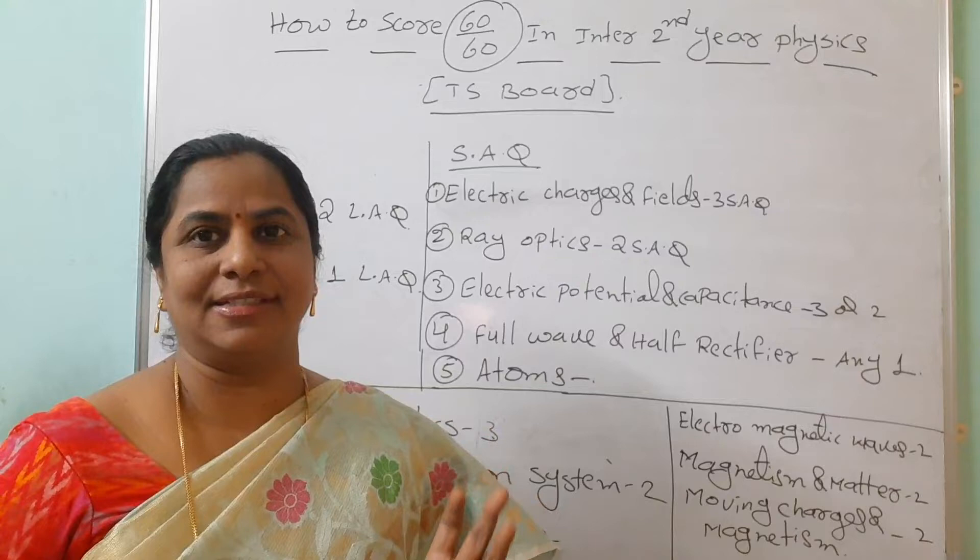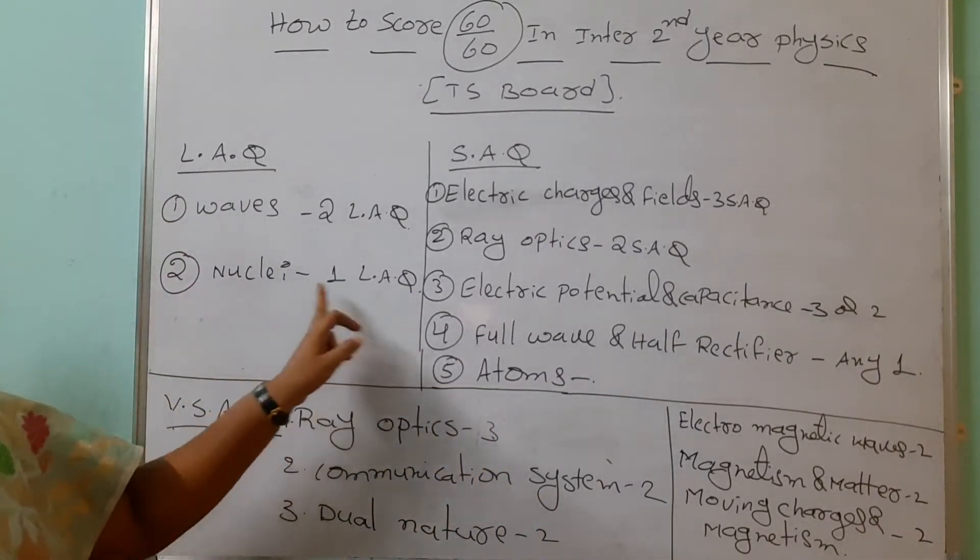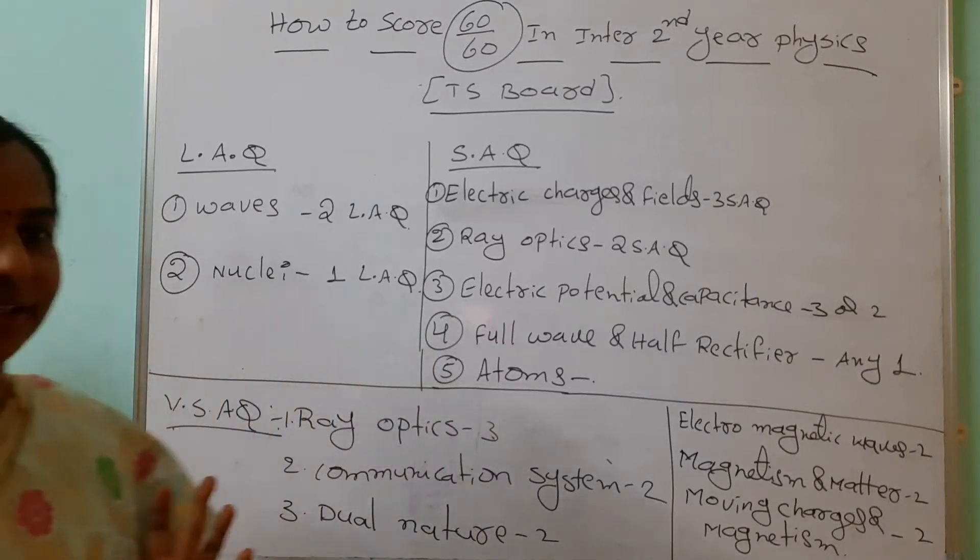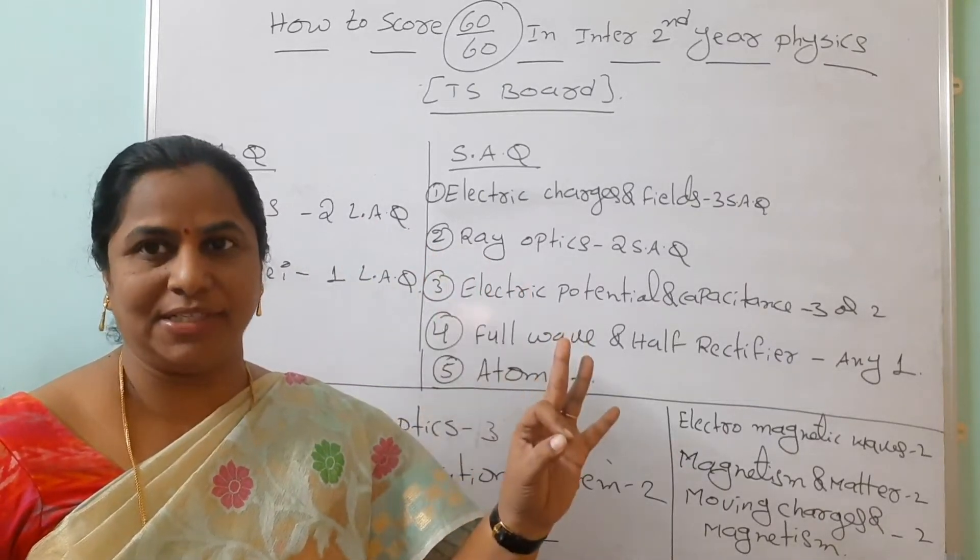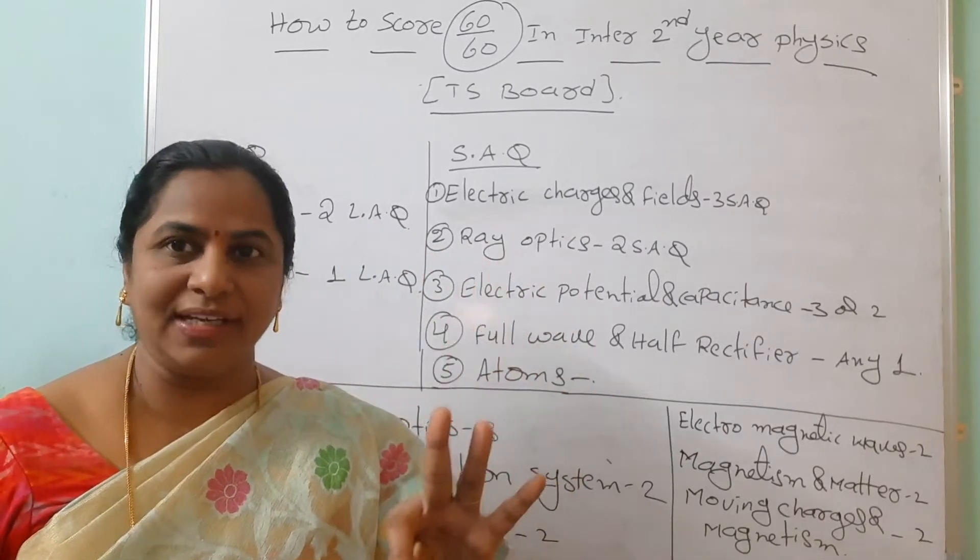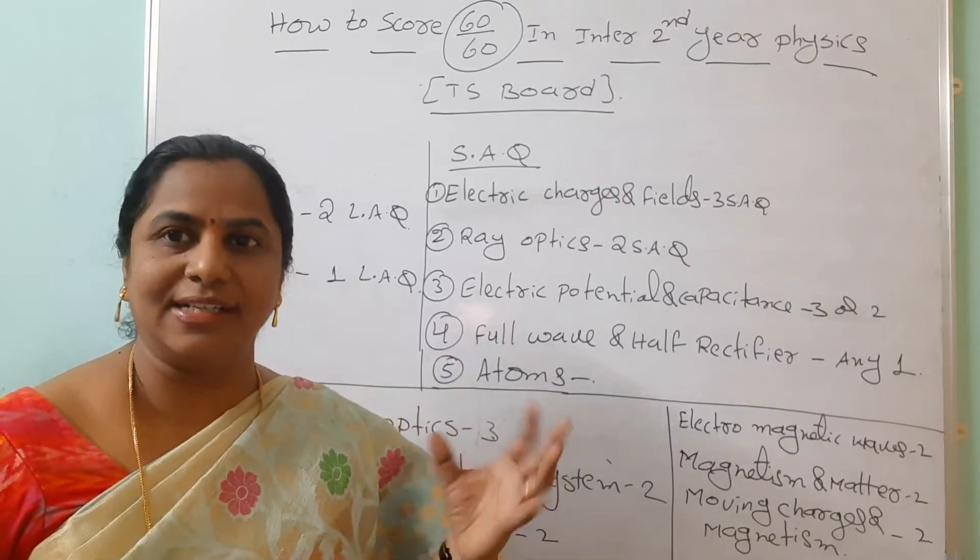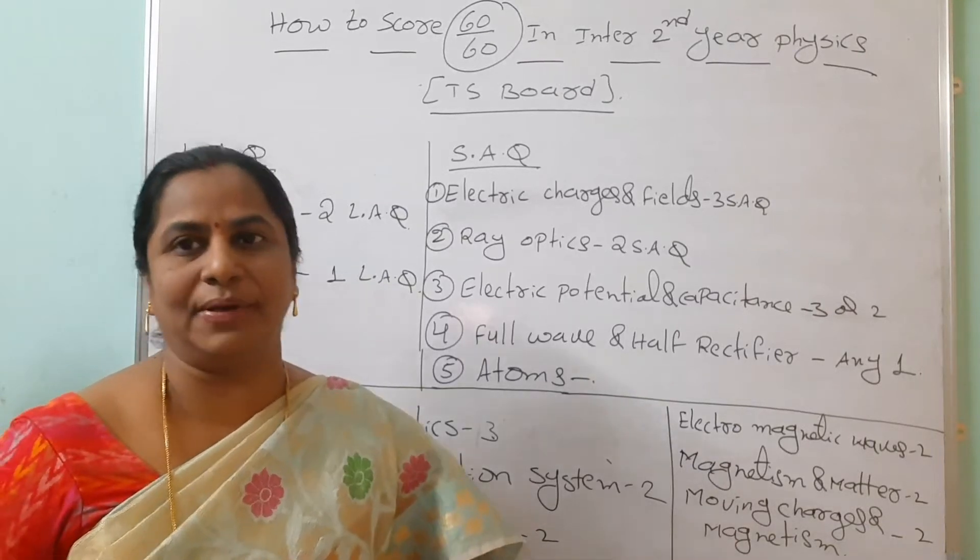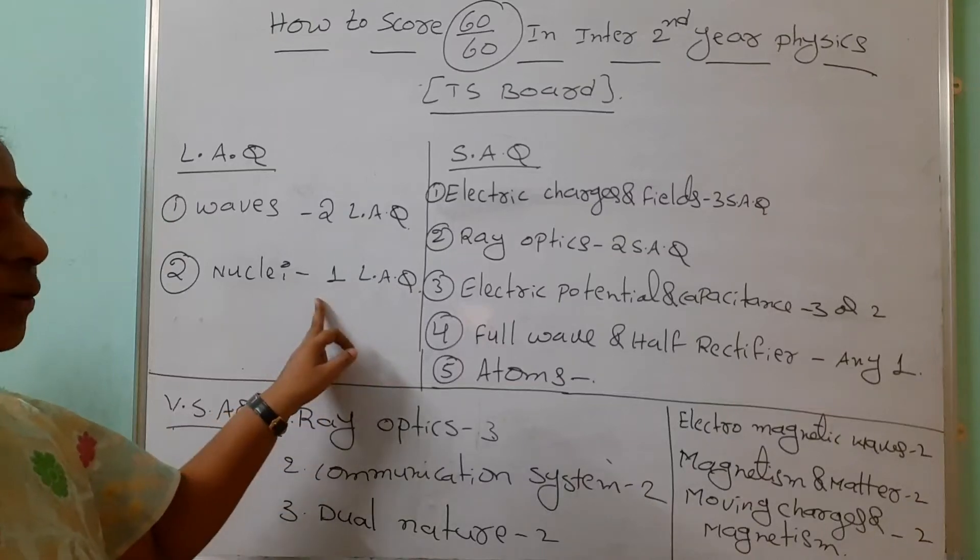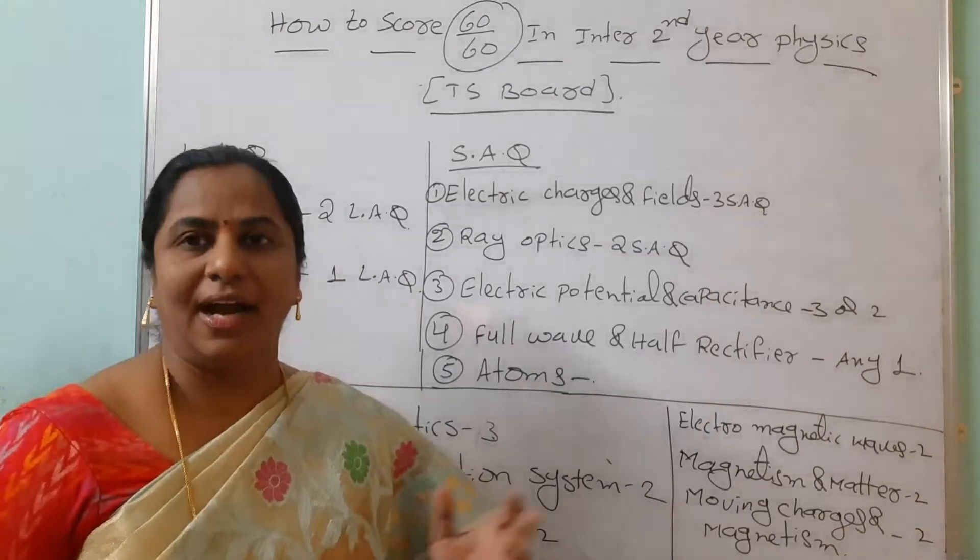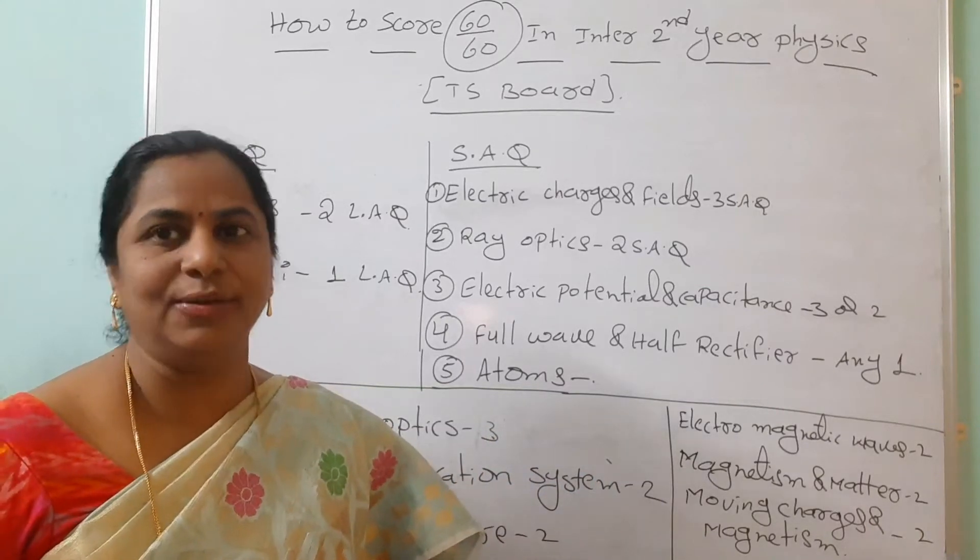Safe side, you have to follow nuclear reactor. In nuclear, only one LAQ is there. So read three LAQs - open pipe, closed pipe, formation of stationary waves - and nuclear reactor. You can write two LAQs. For extra safety, you can read beats also. Don't leave the combination problems. I have already given combination problems along with LAQ from second year. You have to follow that.